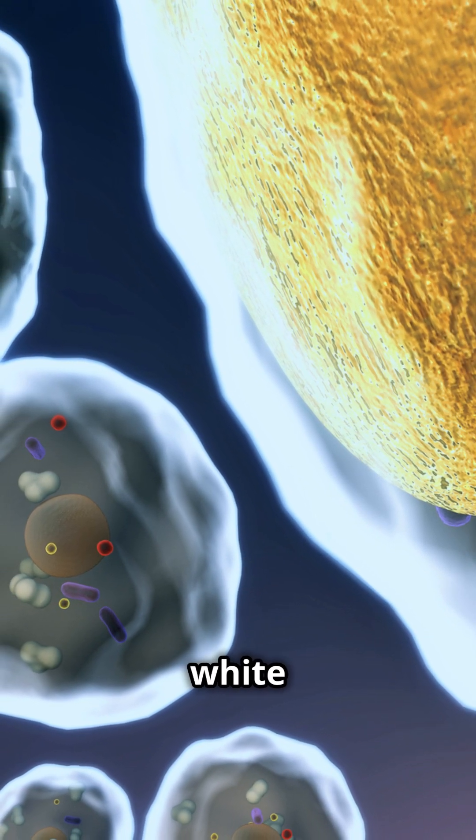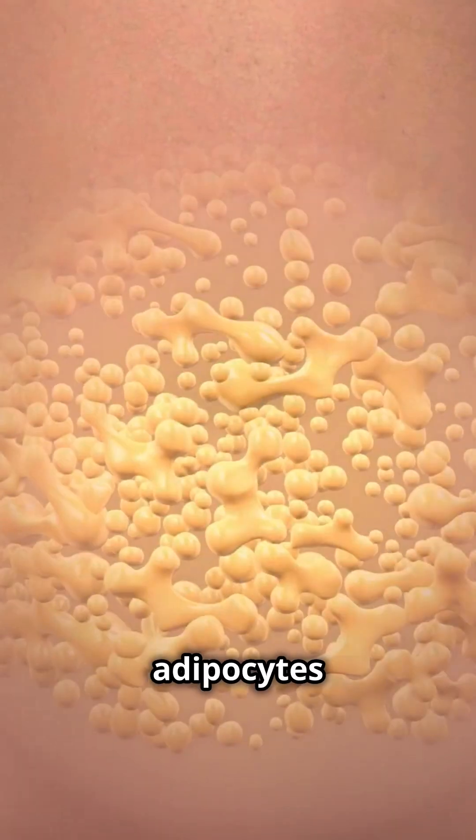Adipocytes come in two main types: white and brown. White adipocytes are the more common type and are primarily responsible for storing fat.